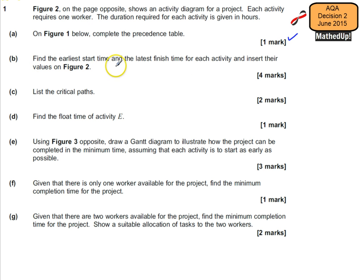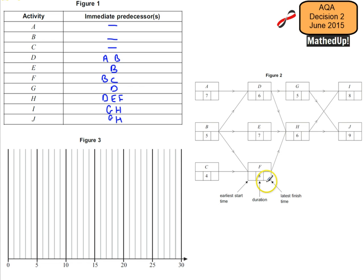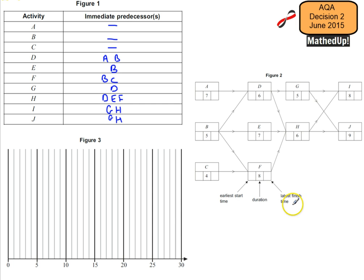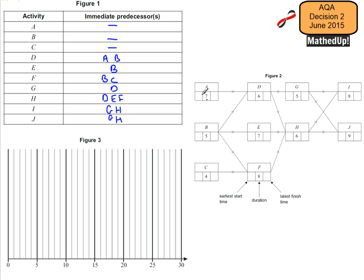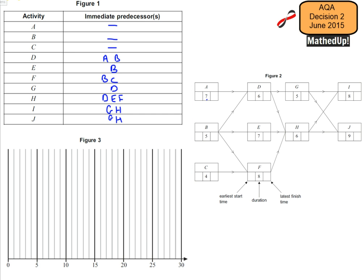Part B says find the earliest start time and the latest finish time for each activity, and insert their values in figure 2. This value here is the earliest start time, this value is the latest finish time, and the middle value tells us the duration. A, B, and C all have an earliest start time of 0.